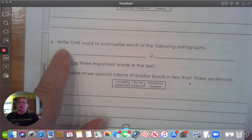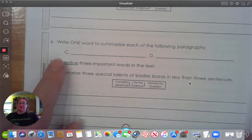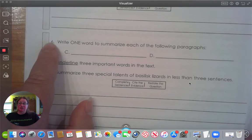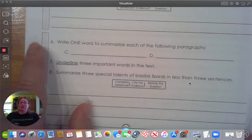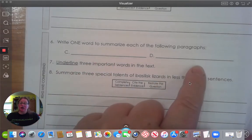Number six. Write one word to summarize each of the following paragraphs. Remember, go back to paragraph C. Find one important word and circle it and put the number six next to it. On this one, go back to paragraph D. Find one important word in that paragraph and write the number six next to that word as well. And then write each of the words that you circled on the line.